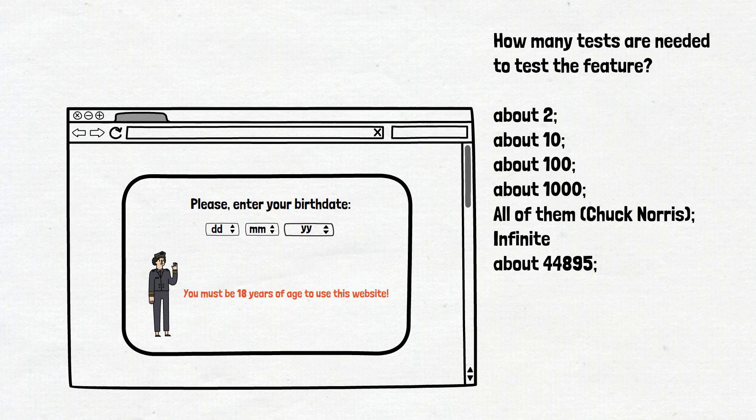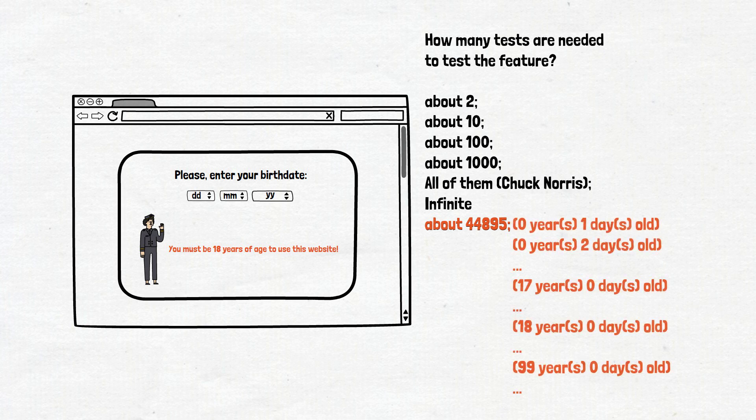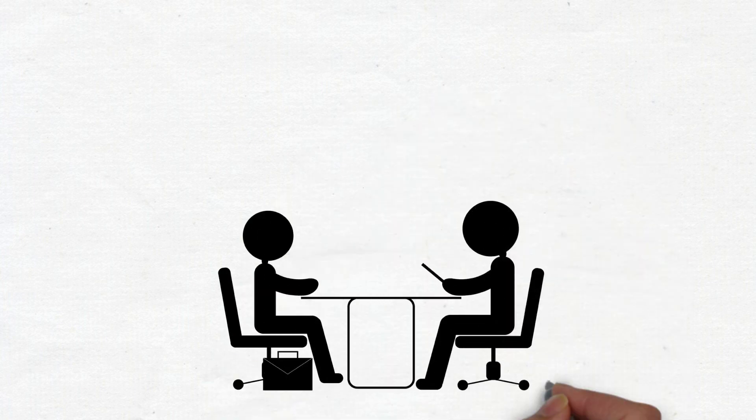We hope those who wanted to pause the video did it. So the answer is about 45,000 test cases. It may sound surprising, but if you use the exhaustive testing approach you need to check all possible input combinations. That way you have 45,000 values of potential input. It is a very simple and small feature, and even for this you have a huge number of test cases.